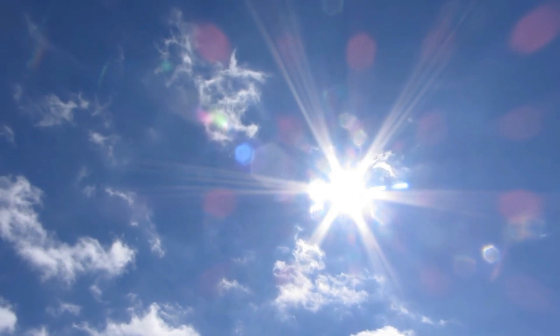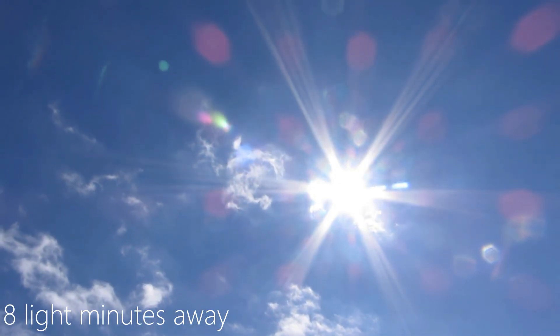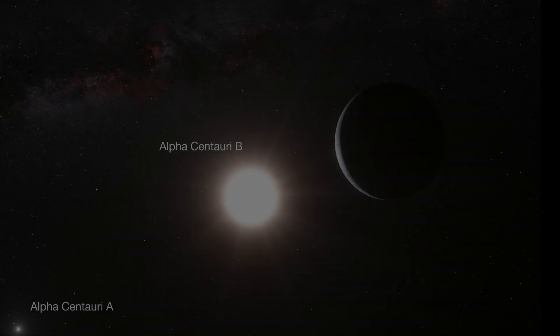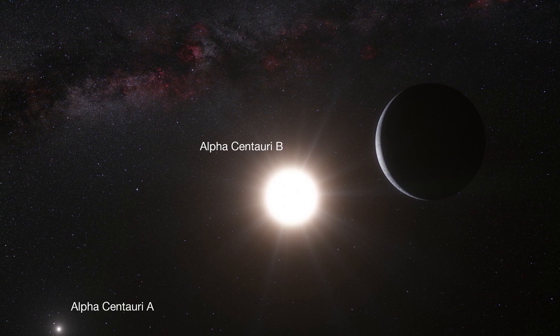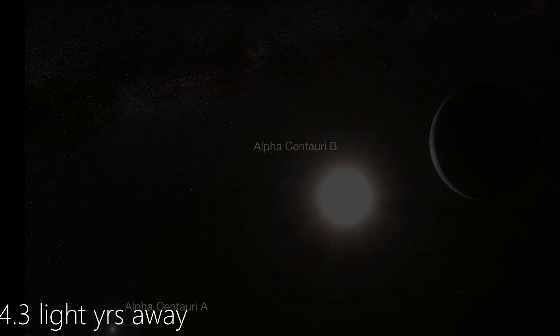However, sunlight takes longer to reach our eyes, taking about eight minutes, suggesting that the sun is about eight light minutes away. Light from Alpha Centauri, our nearest star system, takes about 4.3 years to reach us. So Alpha Centauri is 4.3 light years away.